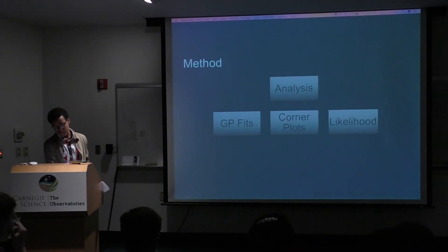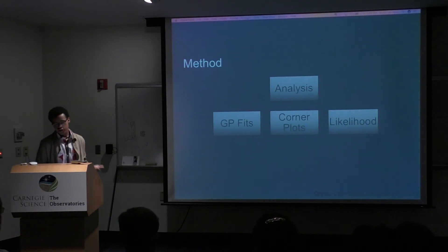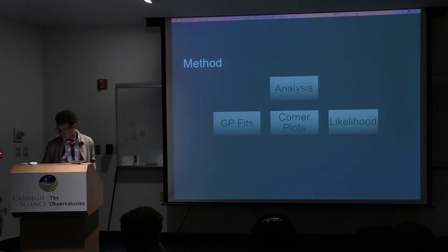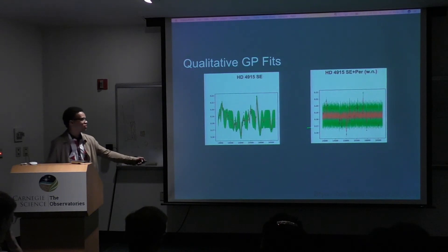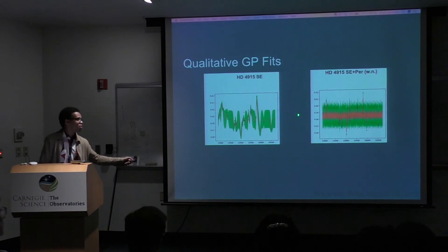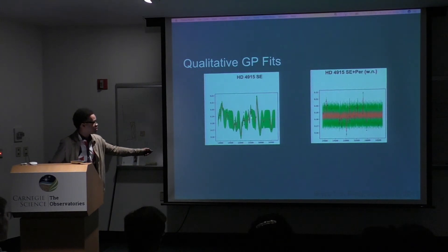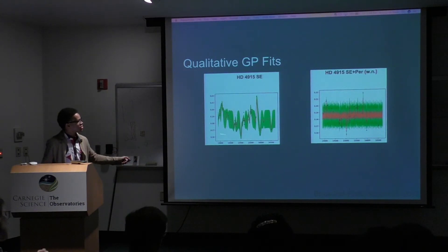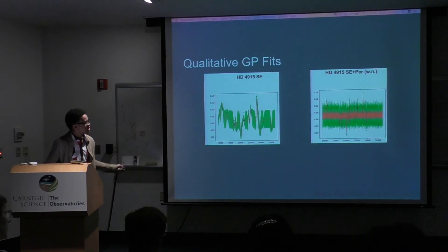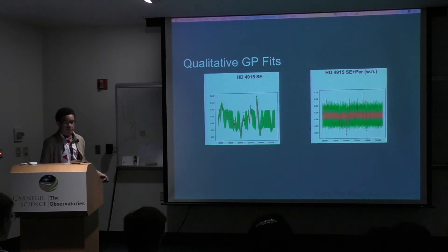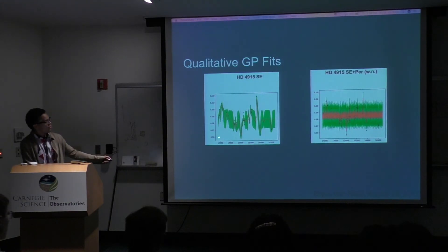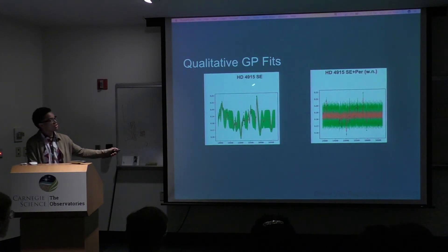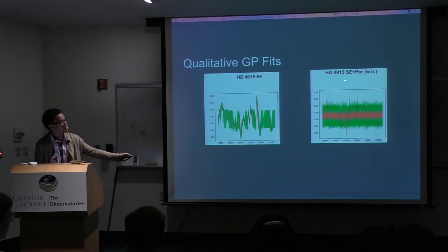Our analysis is threefold: GP fits, corner plots, and likelihood. For qualitative GP fits, just from visual inspection alone, you can tell one looks better than another. The black data points are actual data points; the red line measures the predicted mean of the data. A smooth, periodic mean is preferable over a jagged one. The green represents the predicted variation for the data — we want it focused and centered relative to the mean, not too broad. Squared exponential as a kernel choice actually ended up being a better choice for one star.